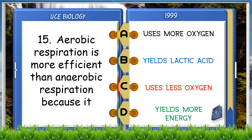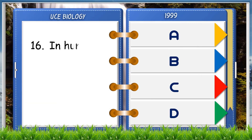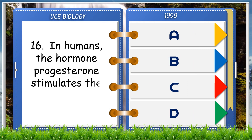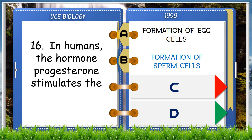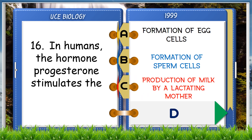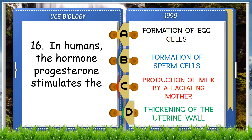In humans, the hormone progesterone stimulates the: A. Formation of egg cells, B. Formation of sperm cells, C. Production of milk by a lactating mother, D. Thickening of the uterine wall. The answer is D, thickening of the uterine wall.